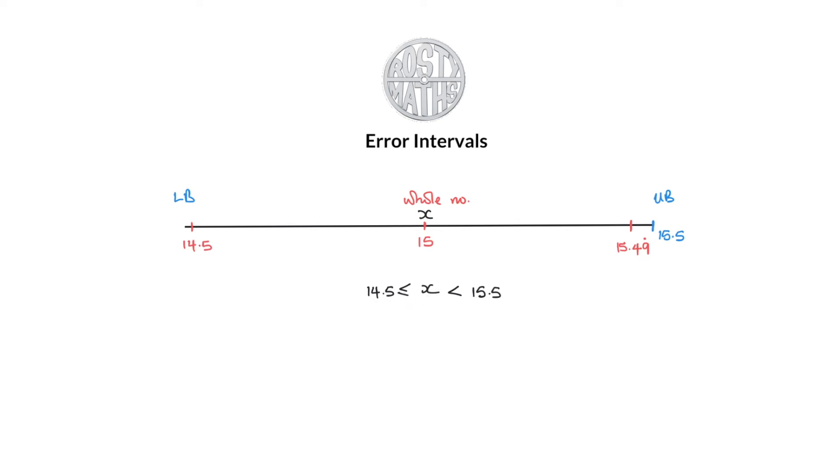To finish this video off we're going to do a few questions. Here's our first one: 25.2 rounded to the nearest one decimal place. If you watch my last video on upper and lower bounds then you should know what's going to happen.